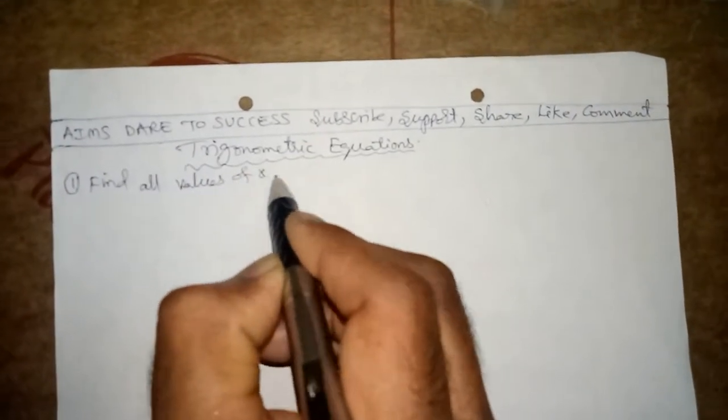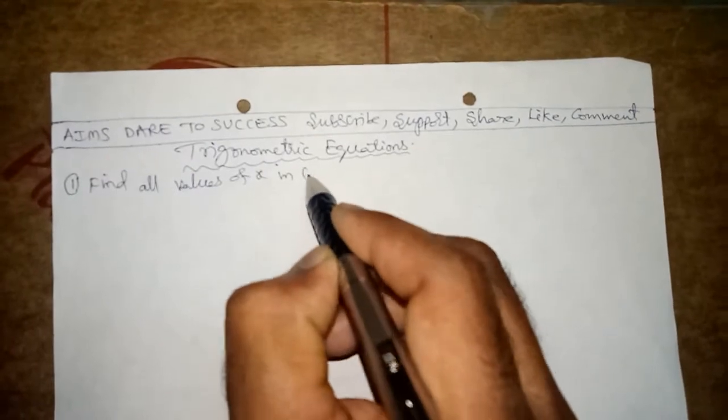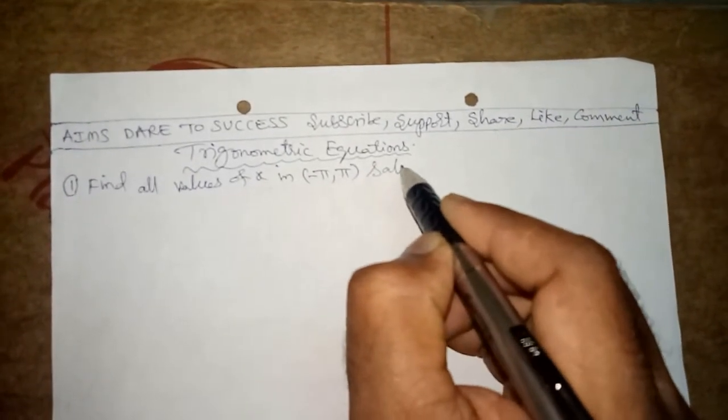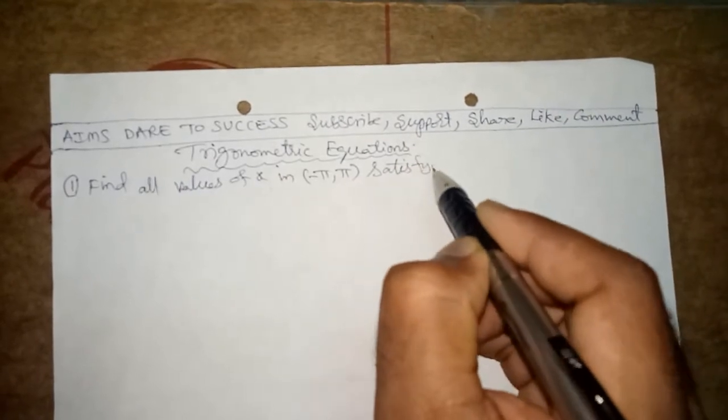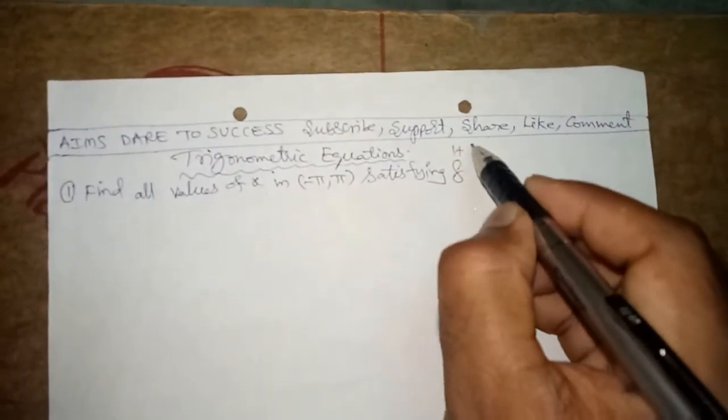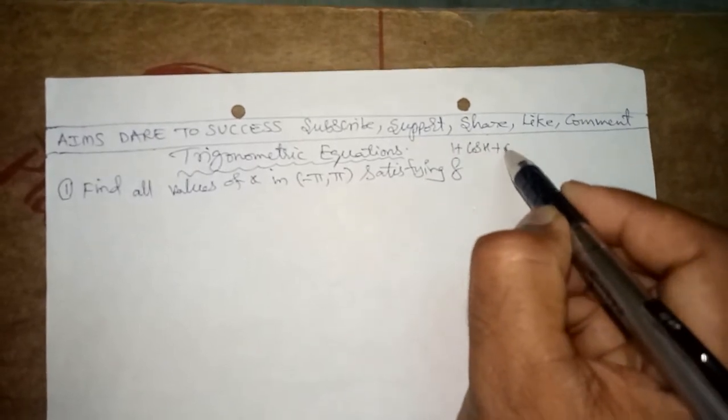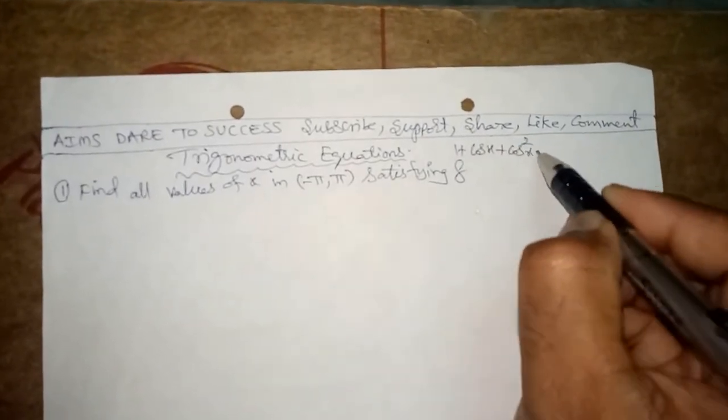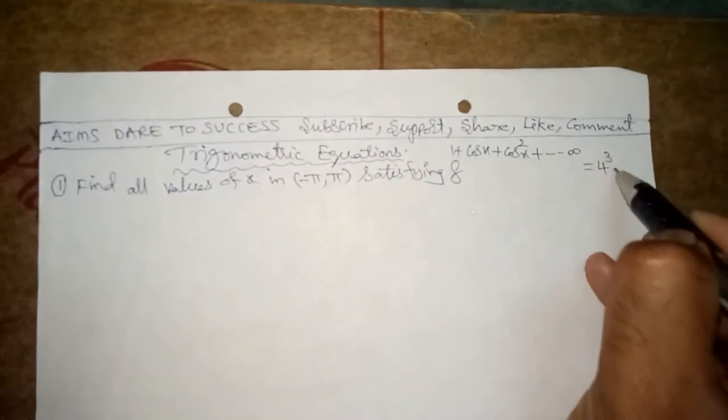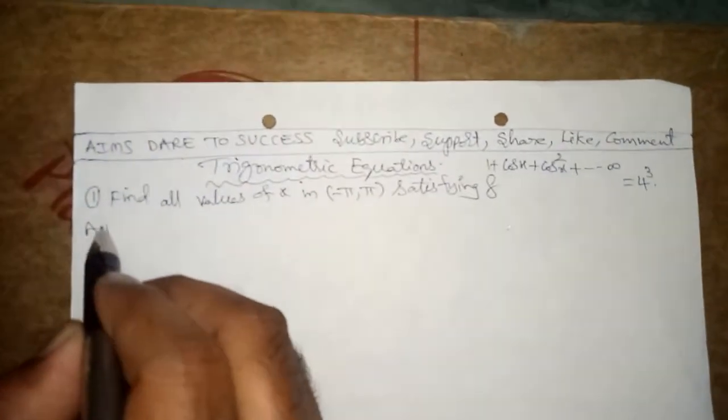...values of x in open interval (−π, π) satisfying 8^(1 + cos x + cos²x + cos³x + ...) = 4³. Aims Dare to Success.